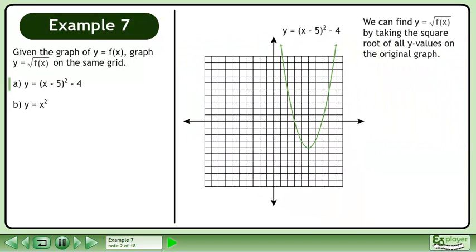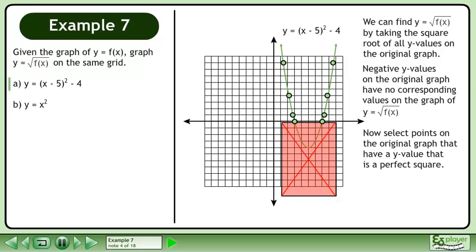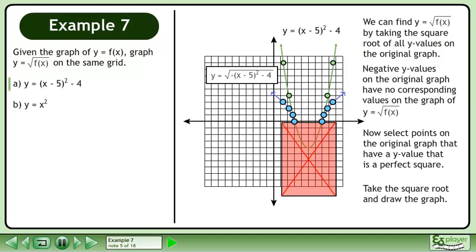We can find y equals the square root of f by taking the square root of all y values on the original graph. Negative y values on the original graph have no corresponding values on the graph of y equals the square root of f. Now select points on the original graph that have a y value that is a perfect square. Take the square root and draw the graph.